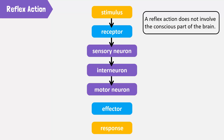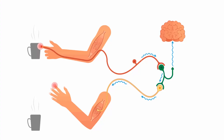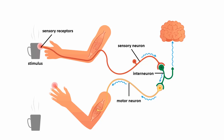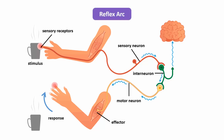Interneurons connect sensory neurons to motor neurons. A motor neuron sends electrical impulses to an effector. The effector produces a response. For example, when you held the hot cup of coffee, a stimulus was detected by your sensory receptors. The sensory neurons send impulses to an interneuron. The interneuron connects the sensory neurons to the motor neurons. The motor neuron sends an impulse to an effector and you drop the hot cup of coffee as a response. This pathway of transmission of impulse is called a reflex arc.